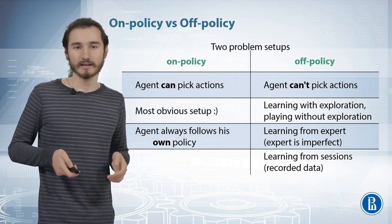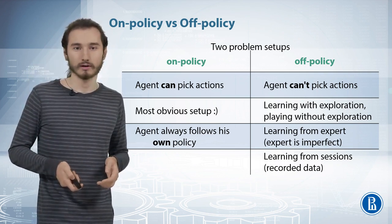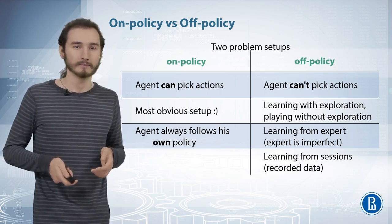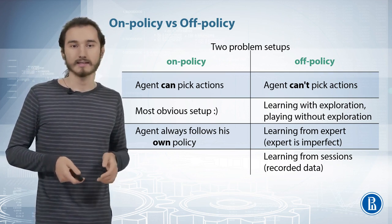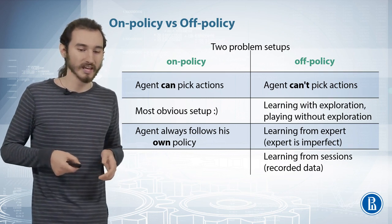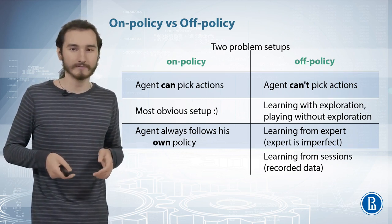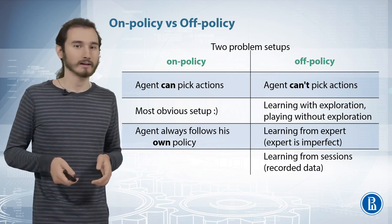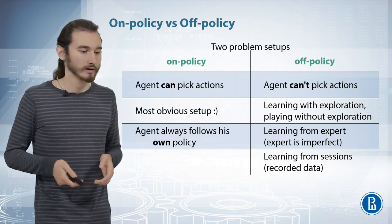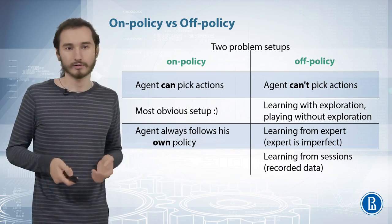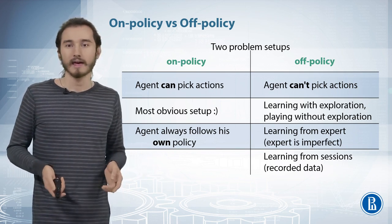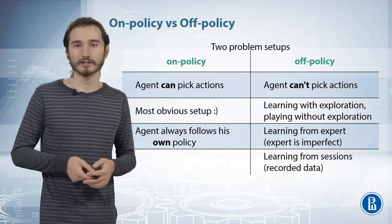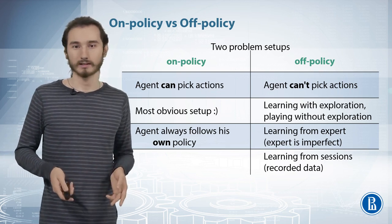Another possible situation with off-policy algorithms, in which Q-learning is also a good way to improve your reinforcement learning agent, is where you are training your agent on a policy which is different from its current policy. For example, you're trying to teach your self-driving car to drive in a particular situation, and you pre-train it not on its own actions, but on the actions of an actual human driver.